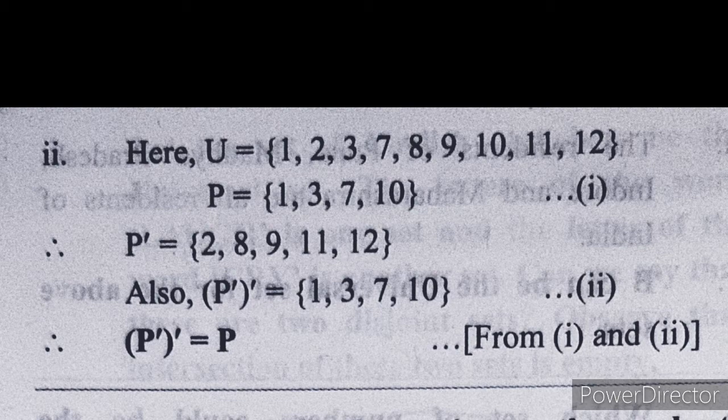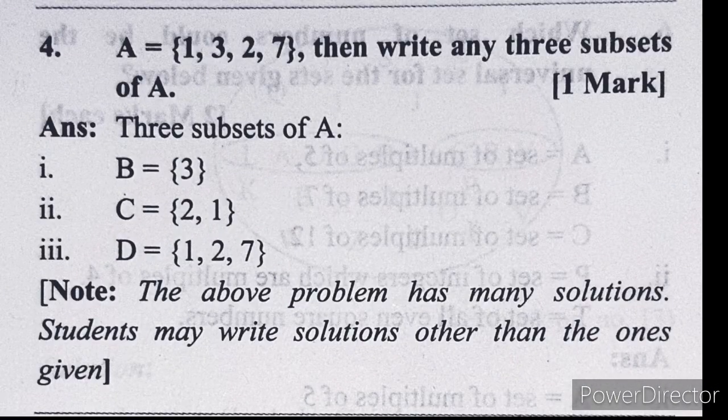Question number 4: Set A has elements 1, 3, 2, 7. Write any three subsets of A. You can write them on your own; three examples are given, but you can write your own.